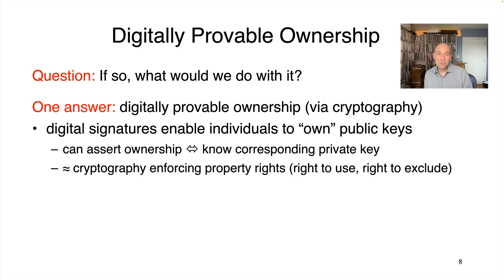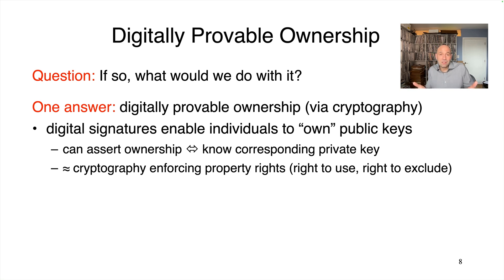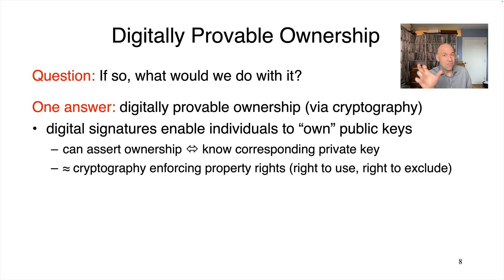Another property right of owning a house is the right to exclude: no one else is allowed to live in your house without your permission. That's a little like how no one else can produce valid signatures with respect to your public key, unless you give them permission — unless you give them access to your private key. Crucially, the public key is out there in the world; anyone can copy-paste those 512 bits. But nobody can copy-paste the ownership of that public key, because that's granted by the private key secretly known to the owner.